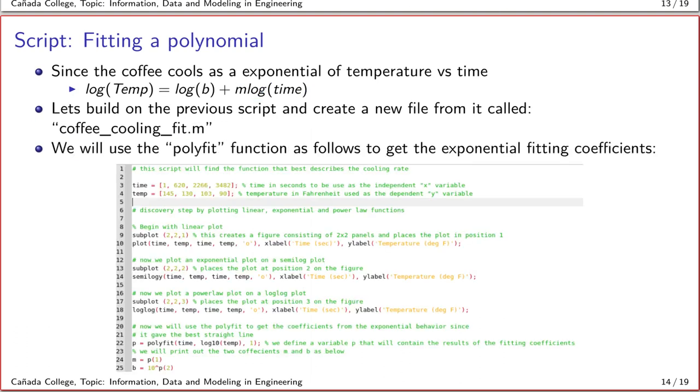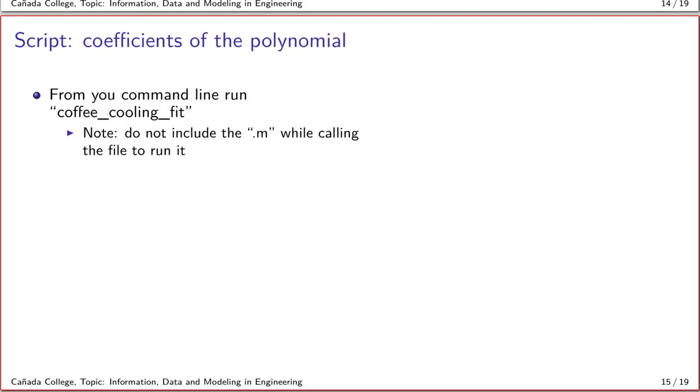What I'm doing now is entering the polyfit function commands that we did in our last lesson on the command line, but now I've included it directly into my script file. You can see the command is given here on line 22 along with some information telling you what is going on. I also put m equals p bracket 1 without a semicolon so I can output the value of m, and similarly output the value of the intercept b.